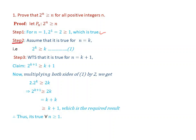Step 2 is the assumption. Assume that it is true for n equal to k. Simply by replacing n by k, we get 2 to the power of k is greater than or equal to k. Let us call this equation 1.